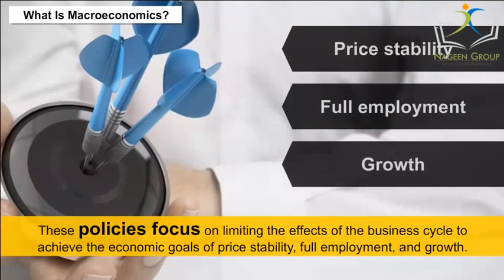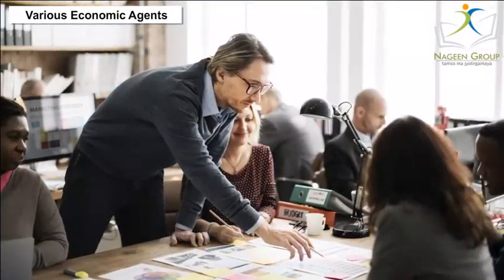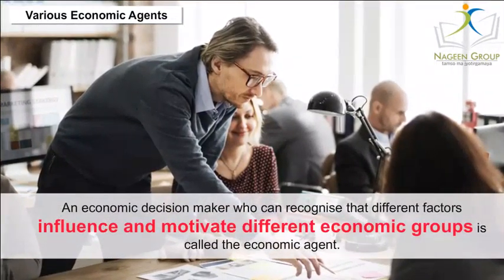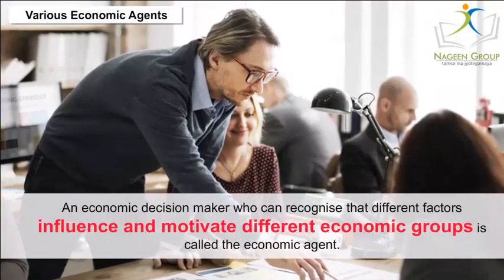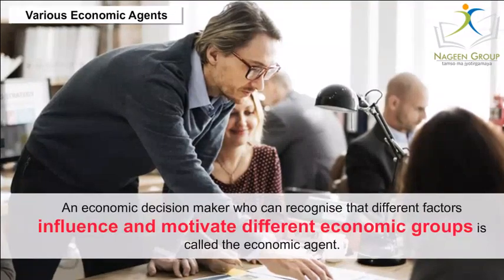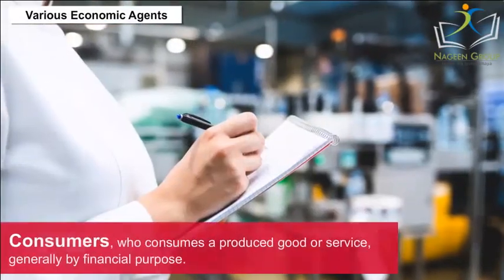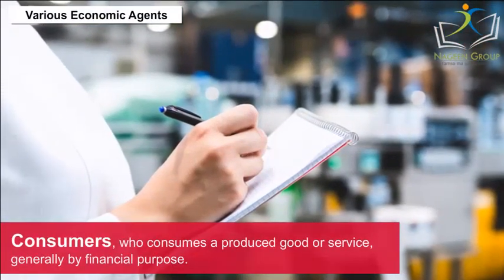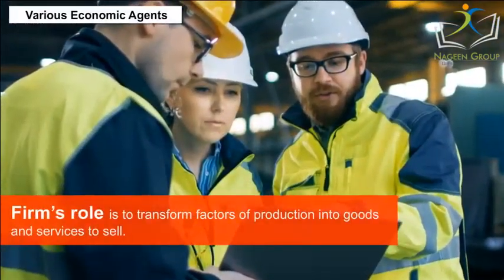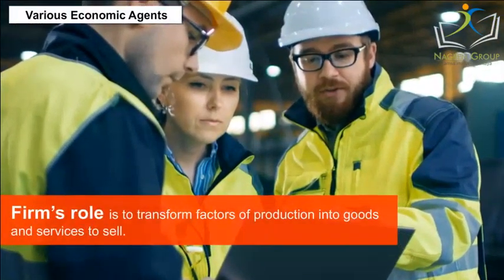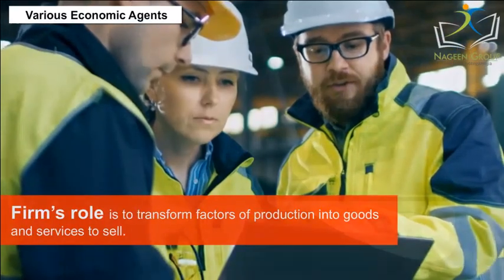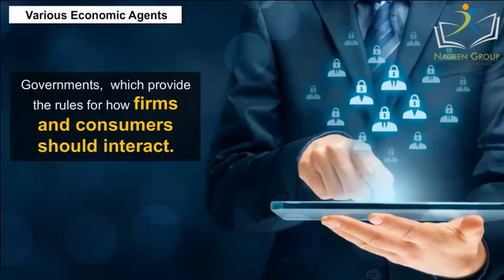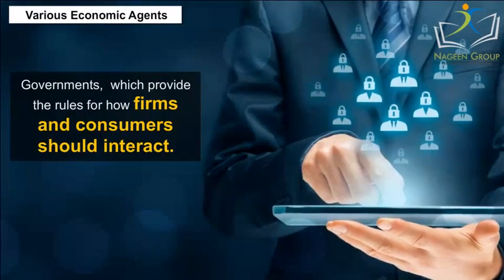Various Economic Agents. An economic decision maker who can recognise that different factors influence and motivate different economic groups is called the economic agent. There are three types of economic agents: 1. Consumers, who consume a produced good or service, generally by financial purpose. 2. Firms, whose role is to transfer factors of production into goods and services to sell. 3. Governments, which provide the rules for how firms and consumers should interact. This is evident in developed economies.